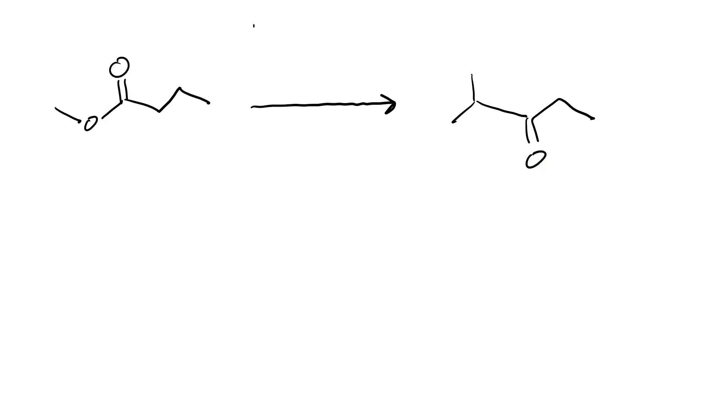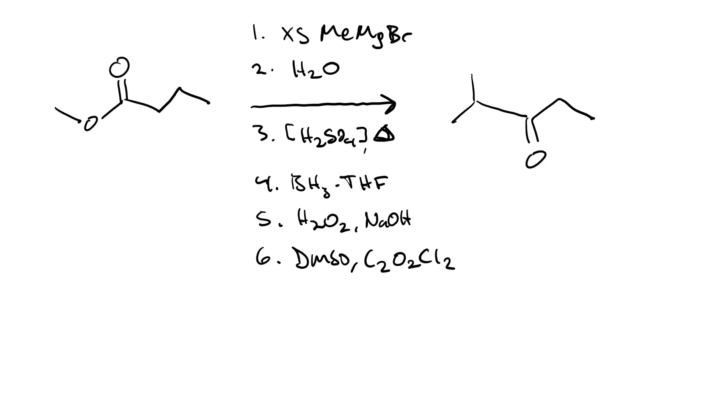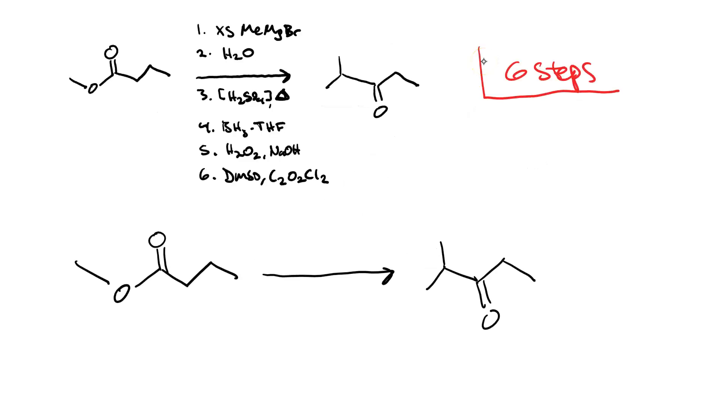1, excess methyl magnesium bromide. Keep in mind, you'd have to do that in diethyl ether. 2, water. 3, concentrated sulfuric acid and heat. That gets us our acid-catalyzed dehydration. 4, hydroboration. That's BH3·THF. 5, oxidation. H2O2, NaOH. That gets us to our alcohol. And then, 6 was our Swern oxidation. DMSO and oxalyl chloride. Right, so that was one possible synthetic route. And that only took us 6 steps.